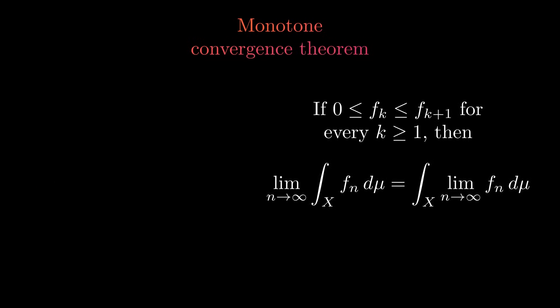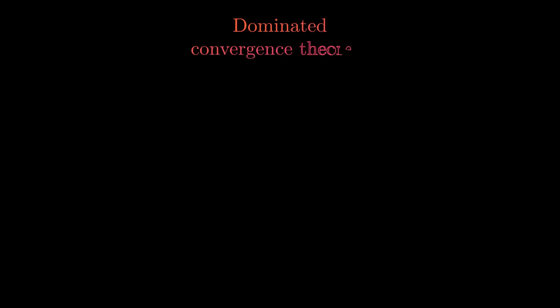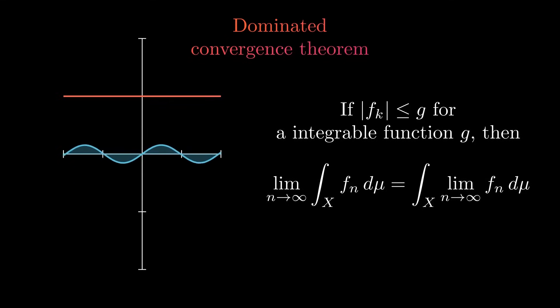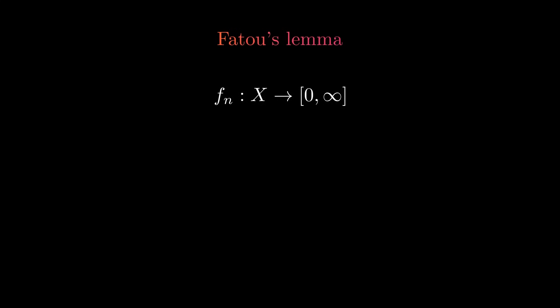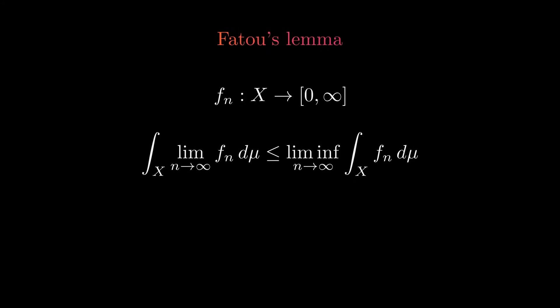The Monotone Convergence Theorem assumes that the sequence of functions is non-negative and non-decreasing — every function in the sequence is pointwise less than or equal to the next — then the interchange of limit and integral is allowed. For the Dominated Convergence Theorem, we assume all functions in the sequence are dominated by an integrable function, so the absolute value of all functions in the sequence is pointwise less than or equal to the dominating function; then the interchange of limit and integral is justified. If every function of the sequence is non-negative, Fatou's Lemma gives an upper bound on the integral of the limit function. This upper bound is the limit inferior as n tends to infinity — the greatest lower bound of the sequence of integrals as n tends to infinity. If the sequence of integrals converges, the limit inferior is the same as the regular limit.